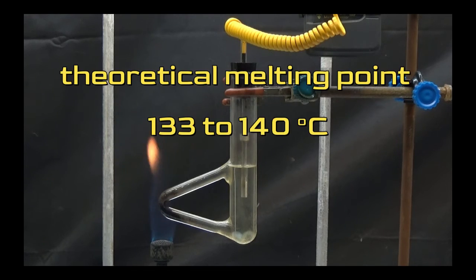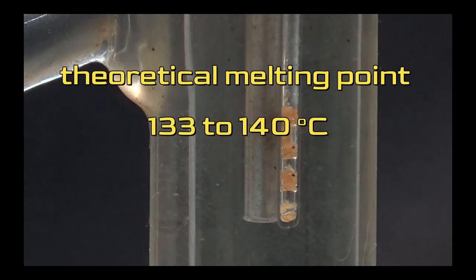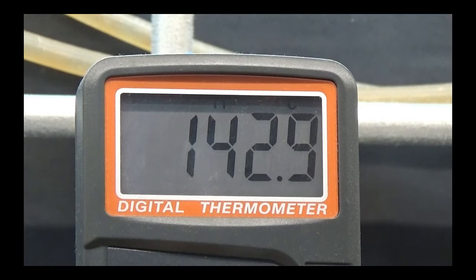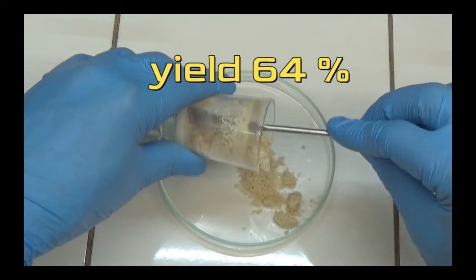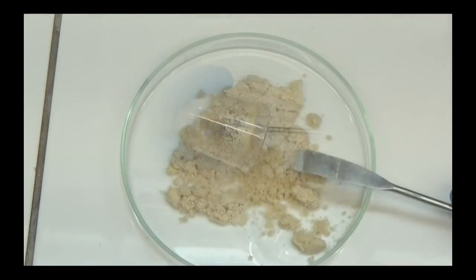The theoretical melting point of 2-benzoxazolinone is 133 to 140 degrees, and in our test, it was 143 degrees, quite close to the theoretical point. The yield of 2-benzoxazolinone synthesis was 64% when salicylamide was used.